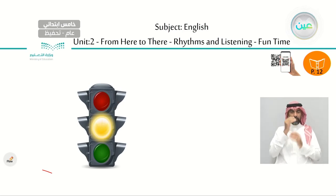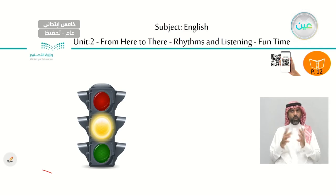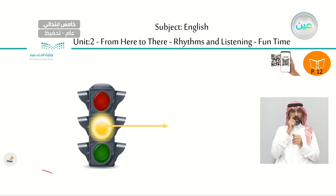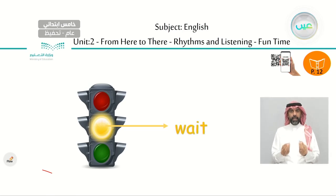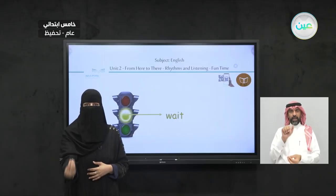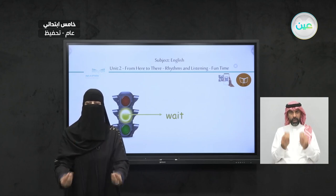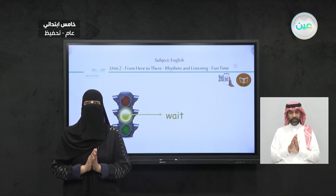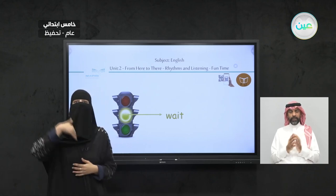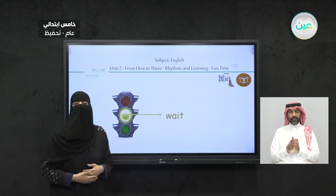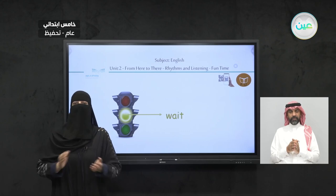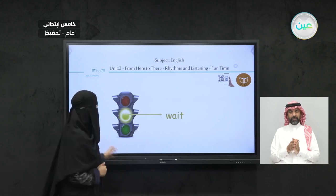Now it is yellow. What does it mean when it is yellow on the road? It means wait. It means wait, wait. Cars should wait because it is going to be red. So wait.